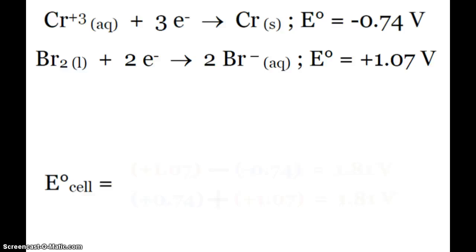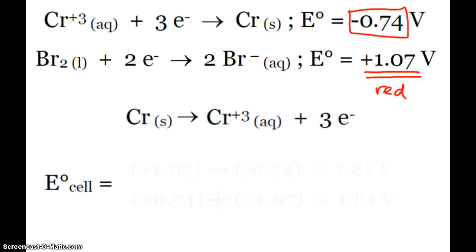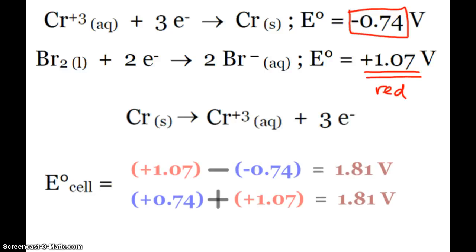A chromium bromine galvanic cell involves the following half cell potentials. I've got the chromium and the bromine. It says, write the half reaction that will occur at the anode. Again, my more positive value is going to stay as the reduction. The less positive value is going to be what is happening at the anode, and will be the oxidation. So you have to flip it. This is what would be happening at the anode.